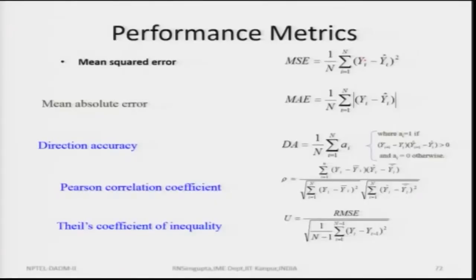When you run any method or test, you have some criteria to analyze how good or bad your results are. The mean square error is where we find the difference between the actual and predicted values, square that, and find the average — this minimizes variance. The mean absolute error finds errors in any direction and gives all weightages as positive, then finds the expected value.